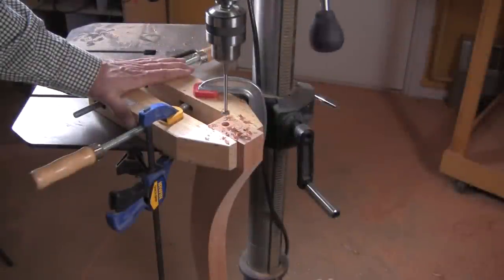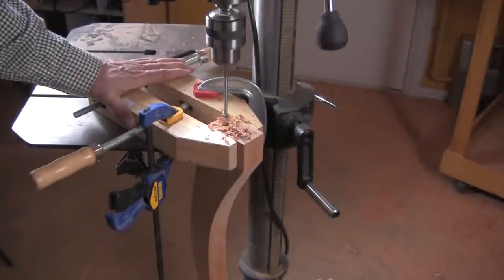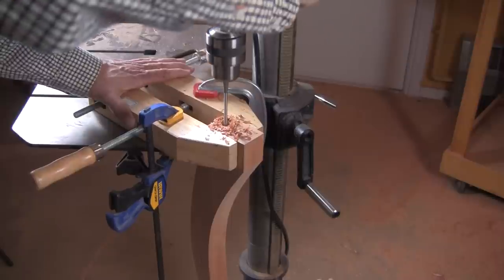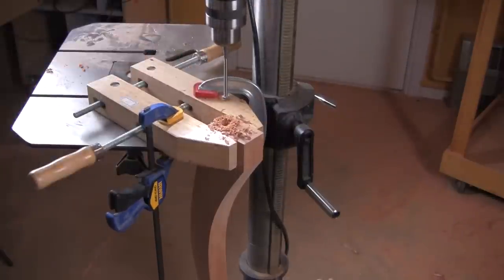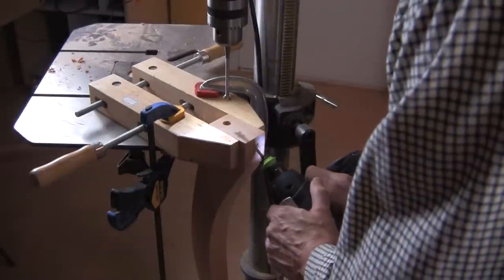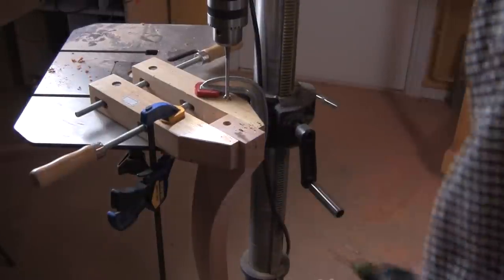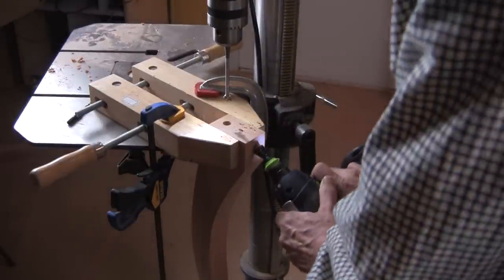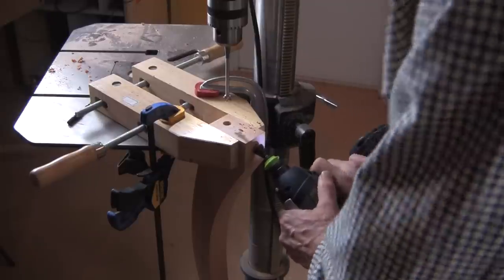After the legs were cut out, I set up my drill press to bore a half-inch diameter hole to accept the half-inch dowel I would use to attach it to the tabletop. I also drilled a screw hole at about 45 degrees in the back face of the leg. The screw adds a bit of strength to the glue joint.